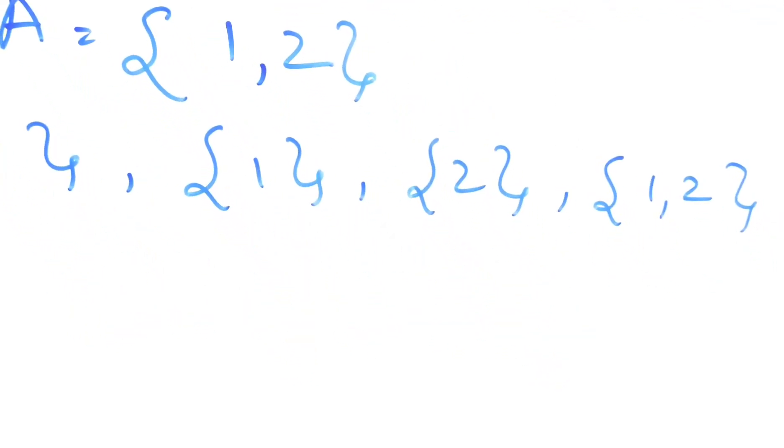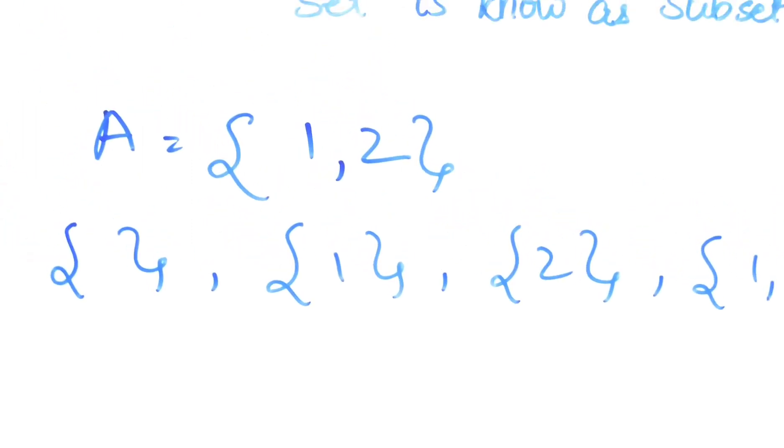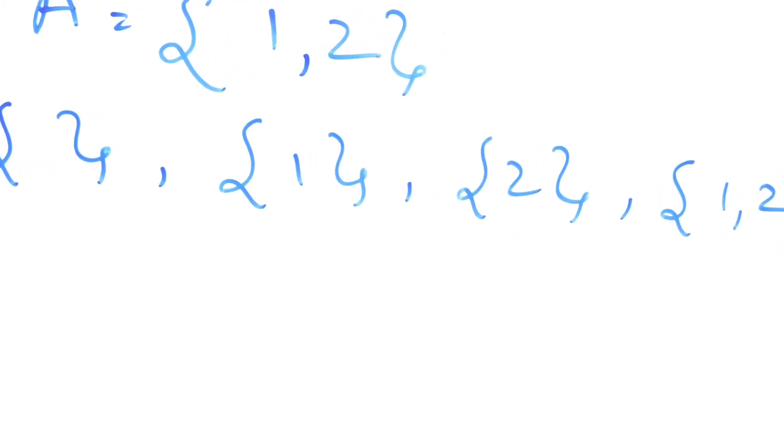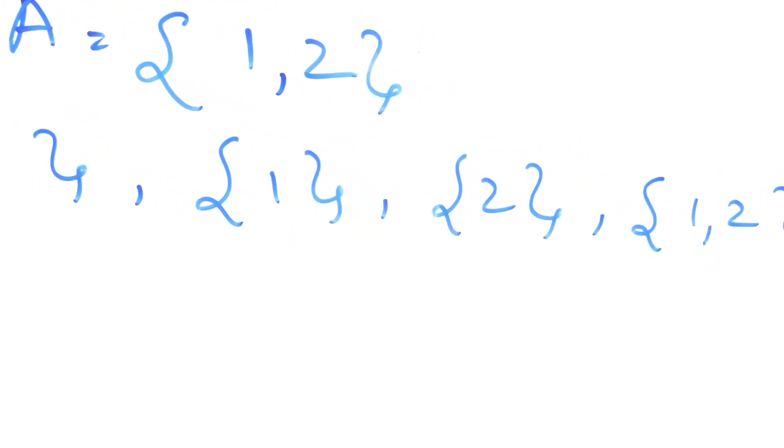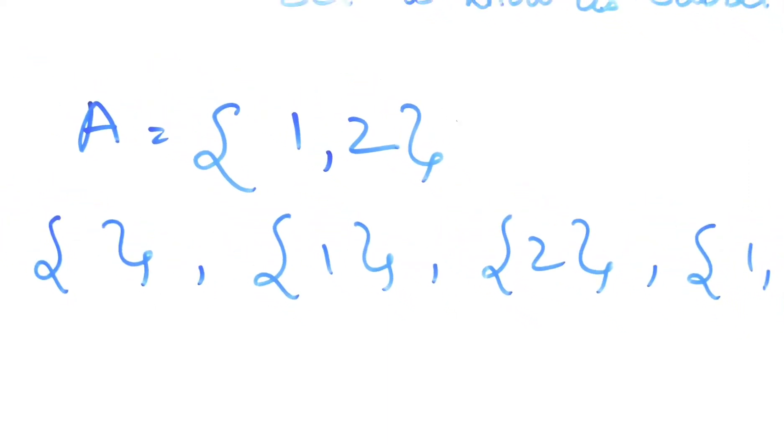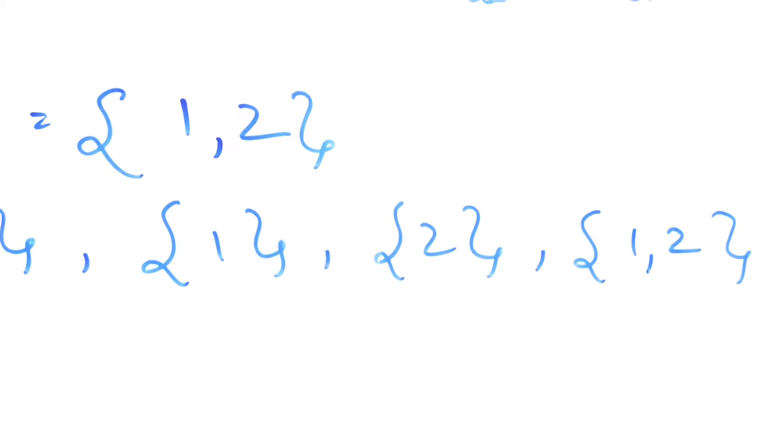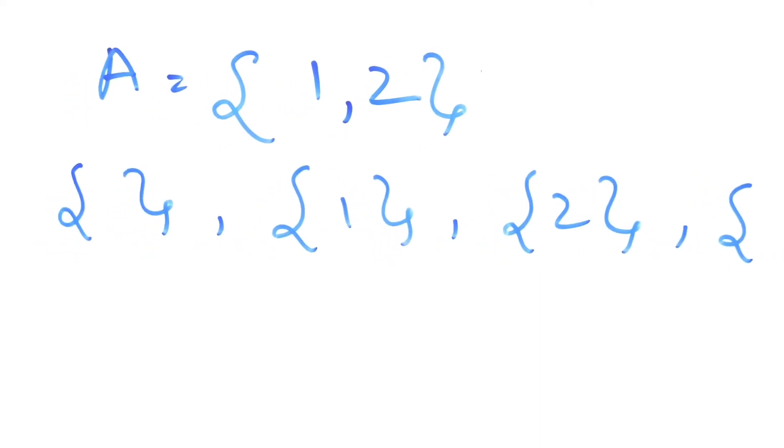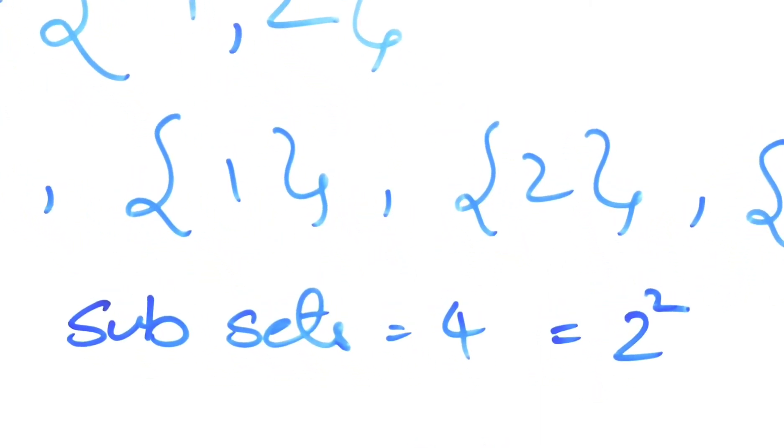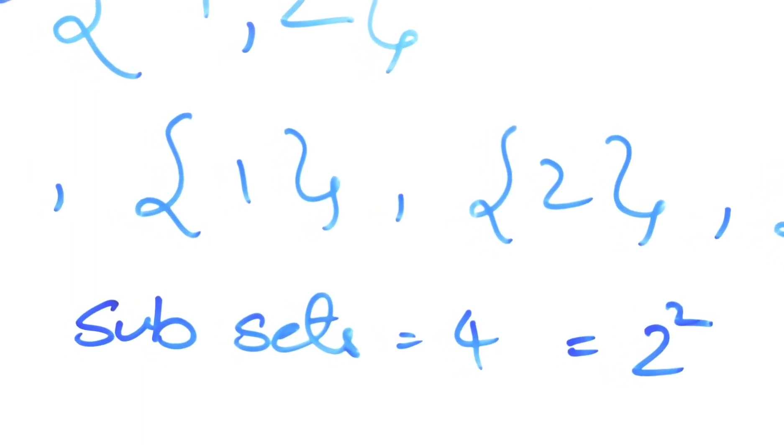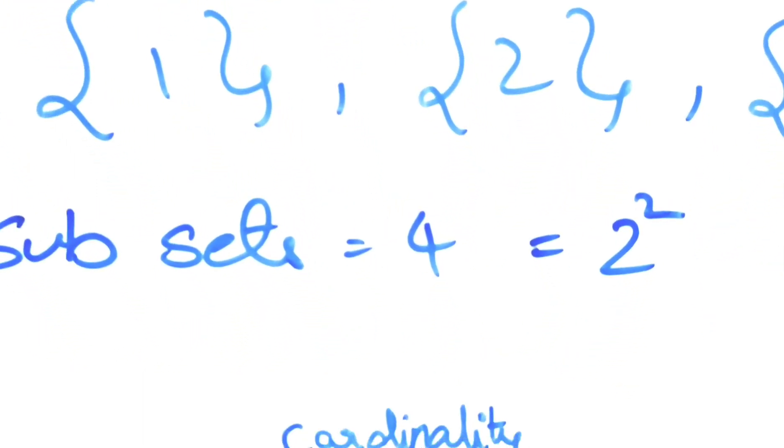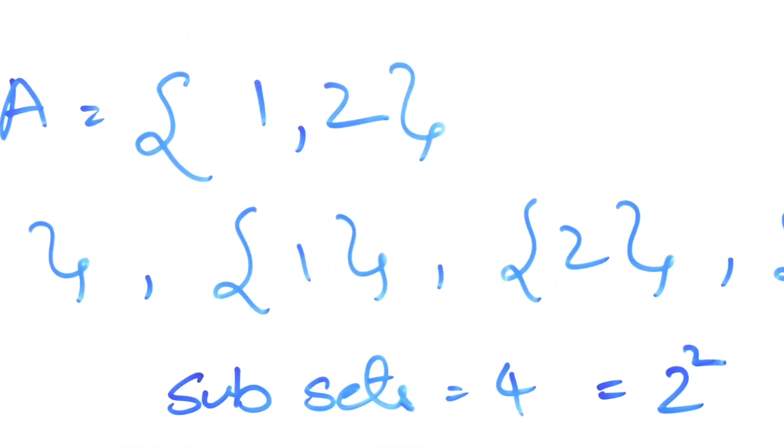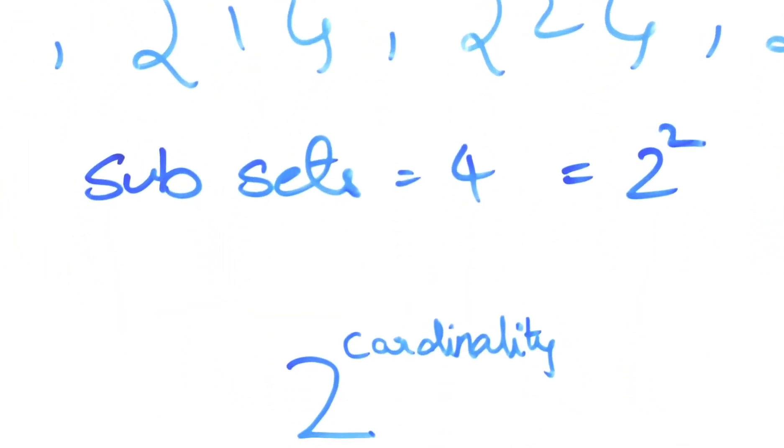Let's say we have a set A with elements 1 and 2. One subset would be the null set. Null set is nothing but subset of all sets because everything contains nothing. The other one will be just 1, then just 2, then 1 and 2. So all of these are nothing but subsets. How many subsets does A have in this case? 4. 4 is nothing but 2 squared, right? Why did we get 2 squared? Because the cardinality of our original set is 2. You will always get 2 raised to cardinality.